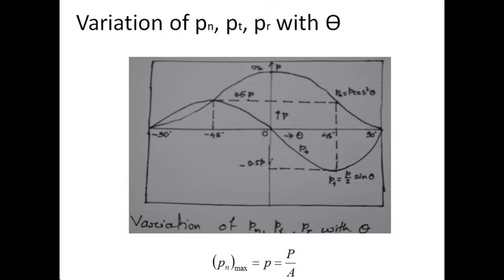This lecture is the extension of the previous lecture on analysis of stress or principal stresses. Here I am going to discuss the variation of different stresses like normal stress, tangential stress, and resultant stress, which I discussed in the previous lecture — the variation of Pn, Pt, and Pr with theta. You can see a figure showing the variation of these stresses as the value of theta varies from minus 90 to plus 90.